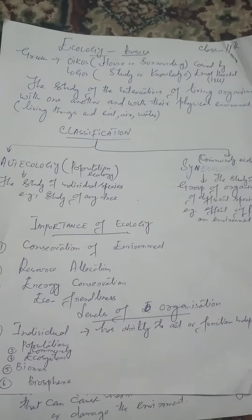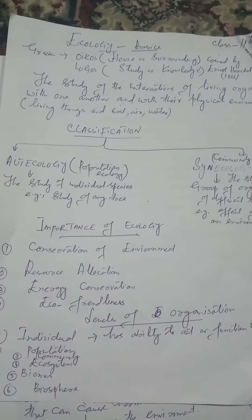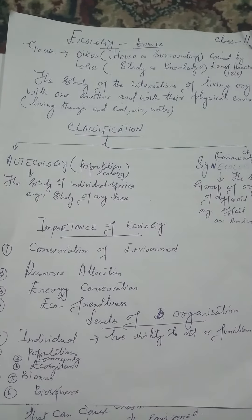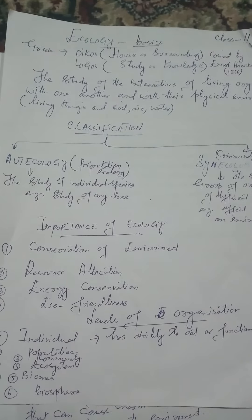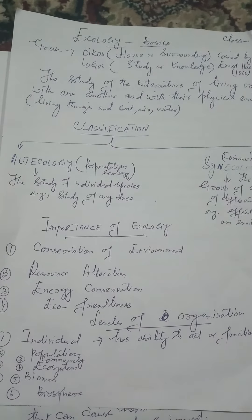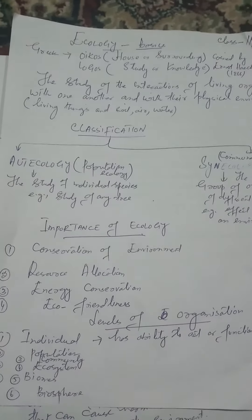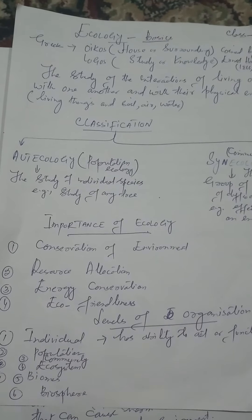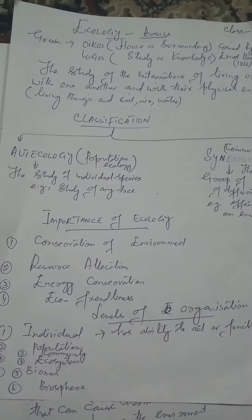Importance of Ecology: Number one, it helps us to understand the conservation of environment — why it is necessary to conserve the environment, what its importance is, and how we can deal with different environmental problems. Number two is resource allocation — how we can allocate different resources, and their distribution and fixation can be decided as per their importance.